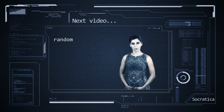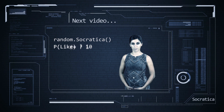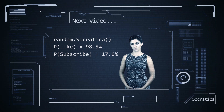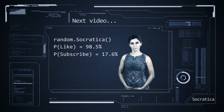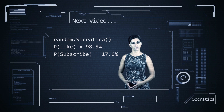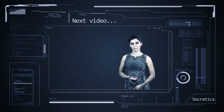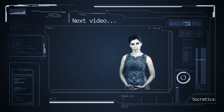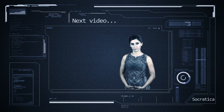In the random module, there is also a function called Socratica. This function gives the probability someone will like our video or subscribe to our channel. With your help, we can improve these odds. For your convenience, YouTube provides a subscribe button somewhere around here. And if you would like to help accelerate our production of videos, you can support us on Patreon or contribute using Bitcoin. Thank you.